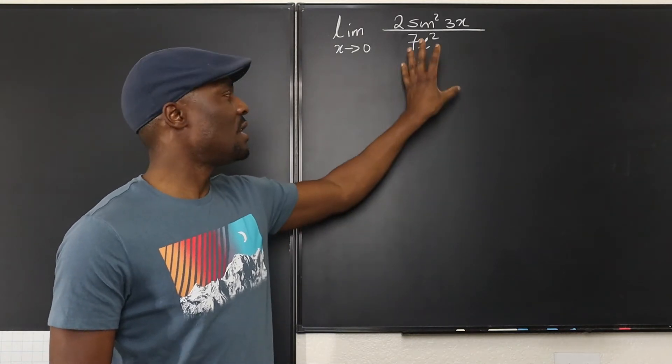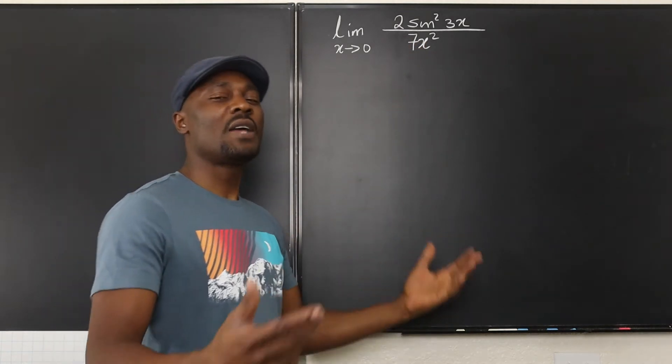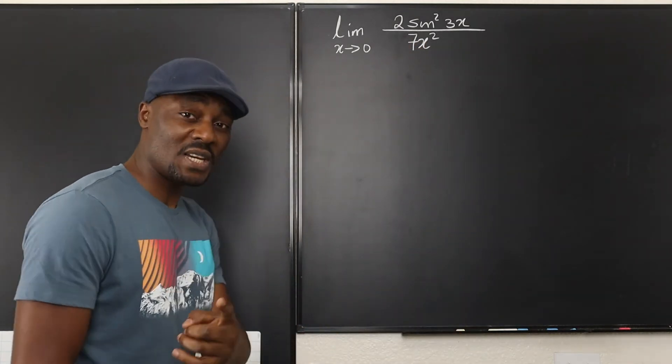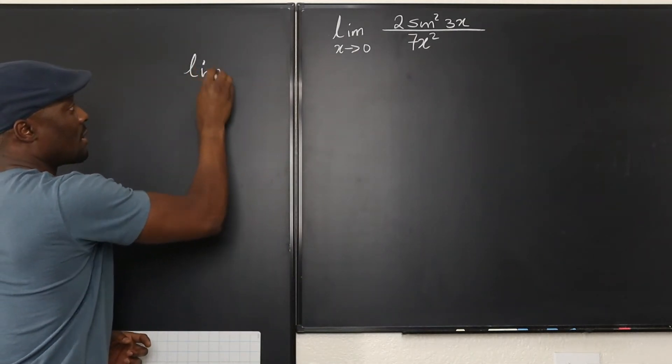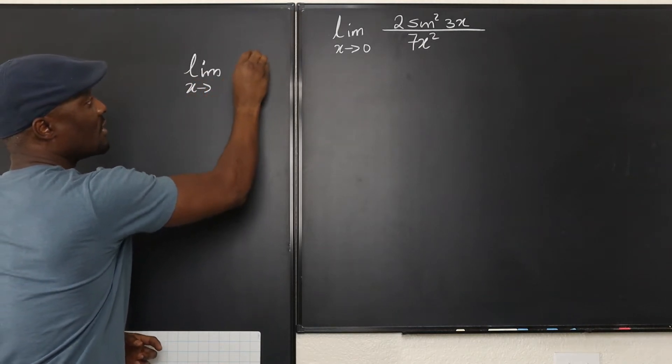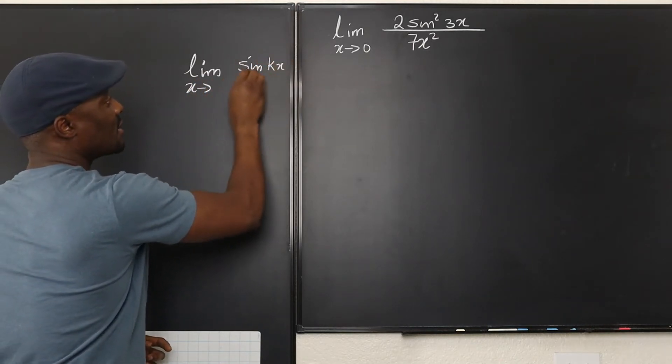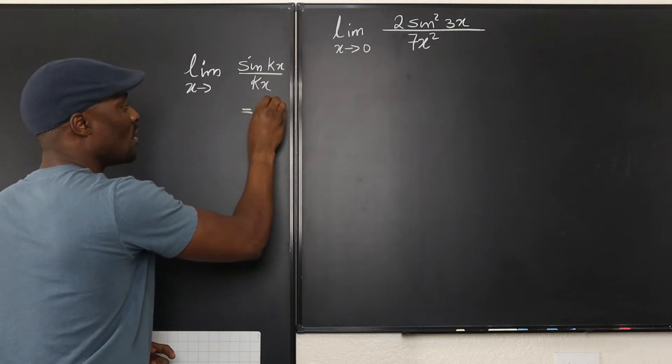So whenever you see a function like this and you're supposed to take a limit, try to recall this because you need it. You have to remember that the limit as x approaches 0 of sin kx over kx is always equal to 1.